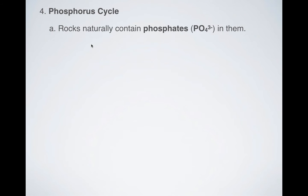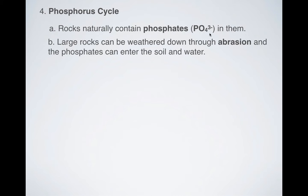Next cycle, the phosphorus cycle. So phosphorus. Rocks naturally contain phosphates. Okay, phosphate has this symbol, PO4 with a three minus. Again, just focus on this. We have one phosphorus and we have four oxygens in a phosphate.